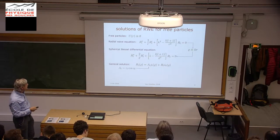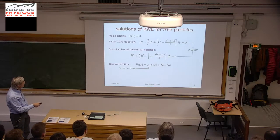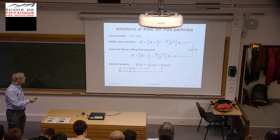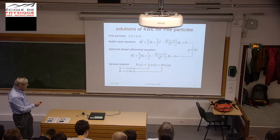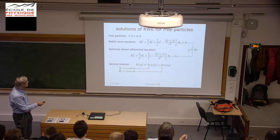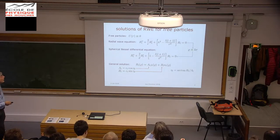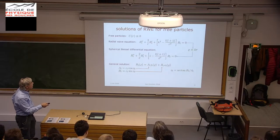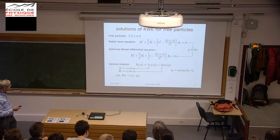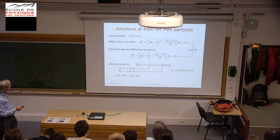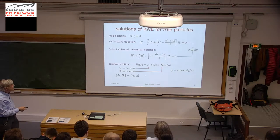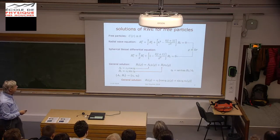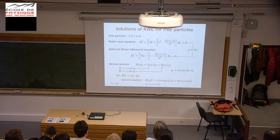The solutions are a linear combination of the spherical Bessel functions and the Neumann functions, with two coefficients. These two coefficients we can rewrite in the form where A_L is a constant times the cosine of the phase shift for a given L value. And the B coefficient can be written as the same coefficient times the sine of the phase shift, the L-wave phase shift. The phase shift itself is the arctangent of the ratio of these two coefficients. A general solution can then be written with the cosine and sine of the phase shift in the expression.